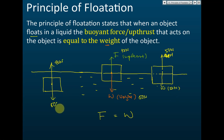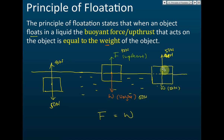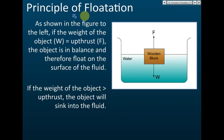However, if the object is fully immersed and the upthrust is still lower than the weight — say upthrust is 40 N and weight is 50 N — the object will sink straight to the bottom. Once fully immersed, no matter how deep it goes, the upthrust stays at 40 N and won't increase, because the volume of water displaced equals the volume of the object, which is constant.